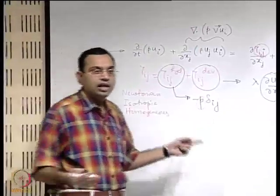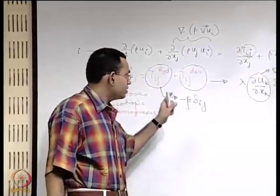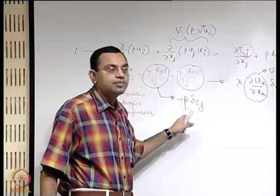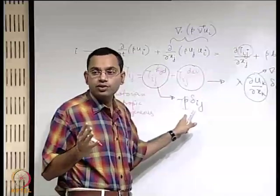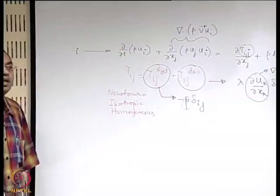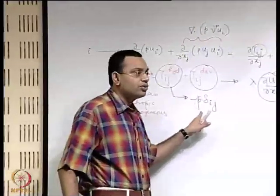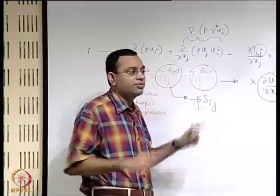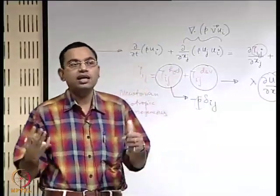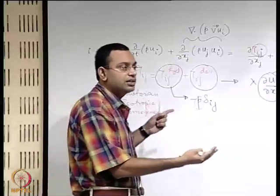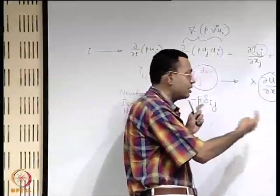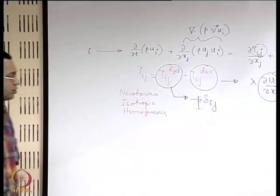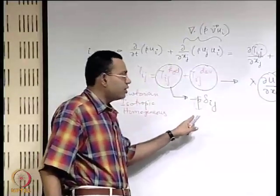For ideal gas, it is like PV = nRT. Thermodynamically, if you know density and temperature at a point, you find pressure through a functional relationship. So if you have 2 independent intensive thermodynamic properties, you can describe pressure as a thermodynamic property. For ideal gas it is a simple relationship with pressure and temperature; for other substances it may be much more complicated. This pressure is called thermodynamic pressure.